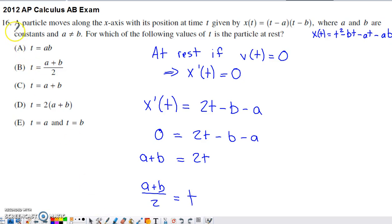This is number 16 from the 2012 AP Calculus exam, a non-calculator question that deals with the motion of a particle on the x-axis. Its position at time t is given by x(t). The position function is unusual because they don't tell us what a or b are, so we just have to realize that a and b are constants and they don't equal the same value.